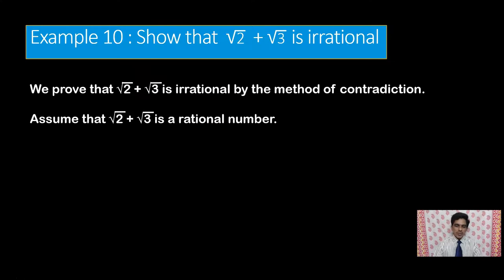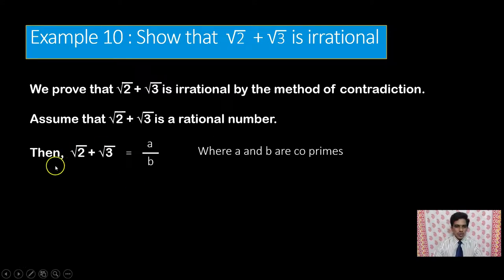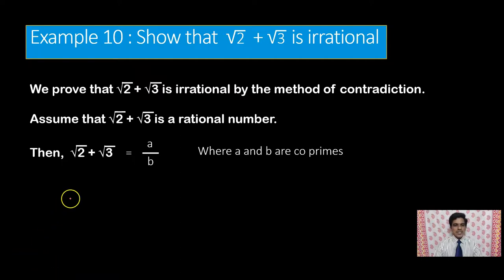We assume that square root of 2 plus square root of 3 is a rational number. So square root of 2 plus square root of 3 can be written as a by b, where a and b are co-primes. On the left-hand side we have square root of 2 plus square root of 3. Now we transpose the square root of 3 from the left-hand side to the right-hand side.